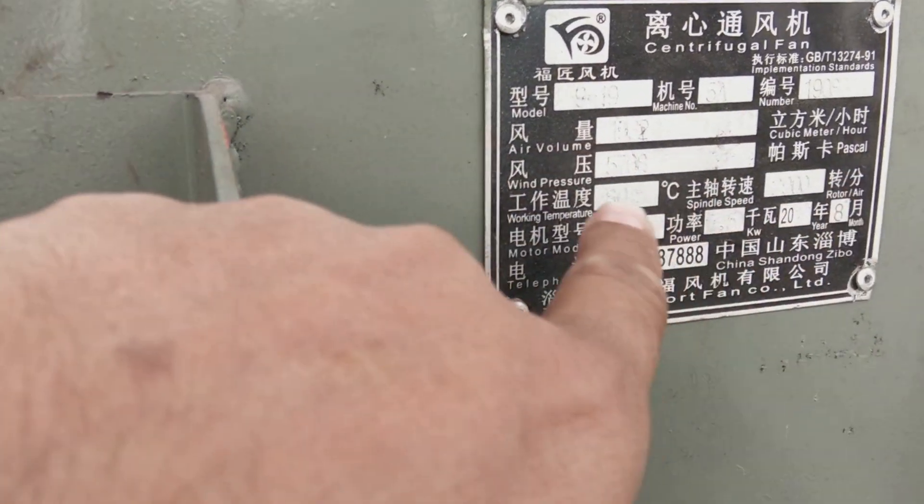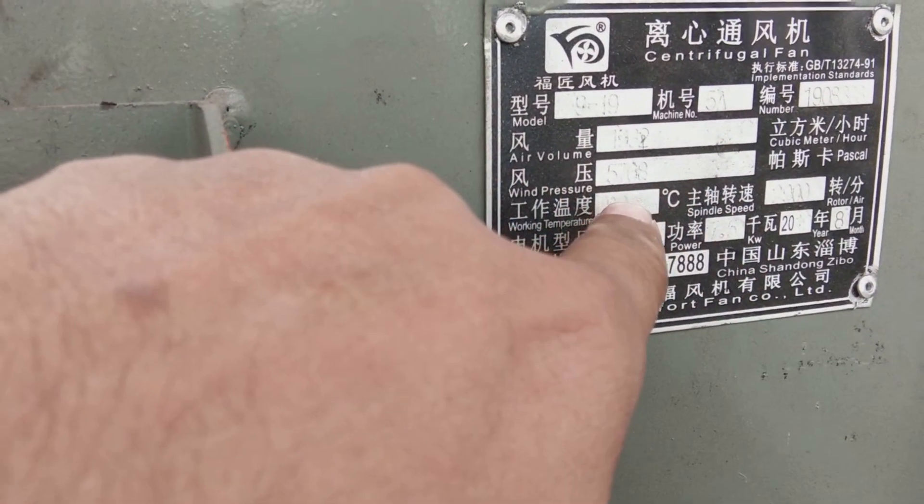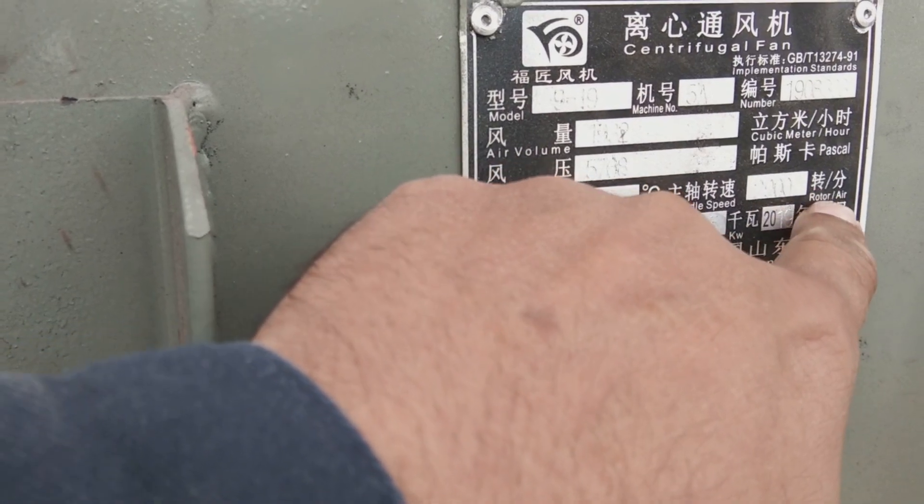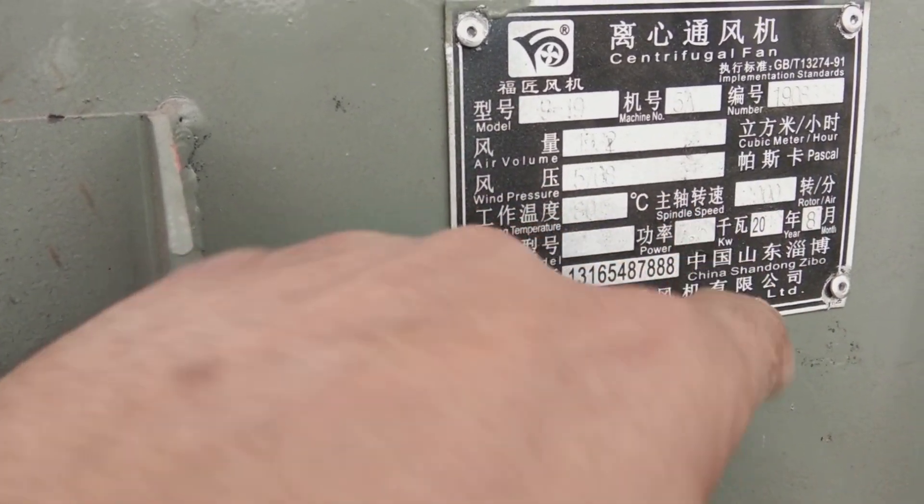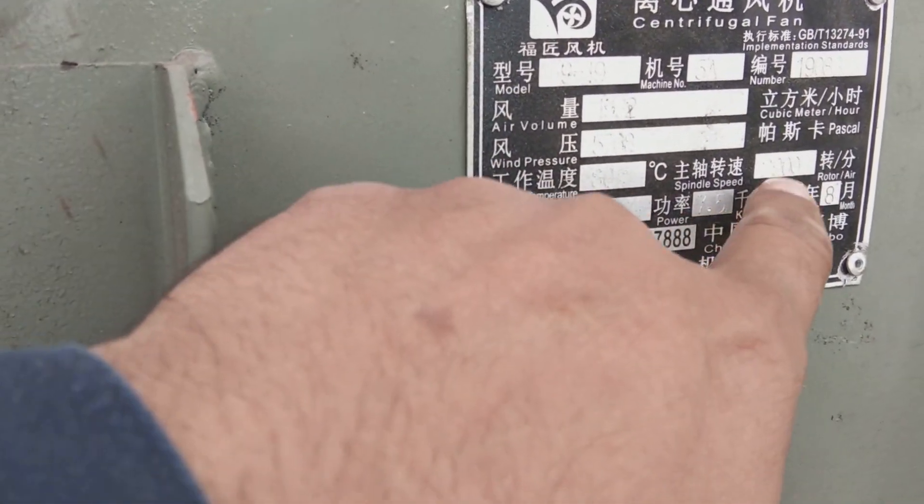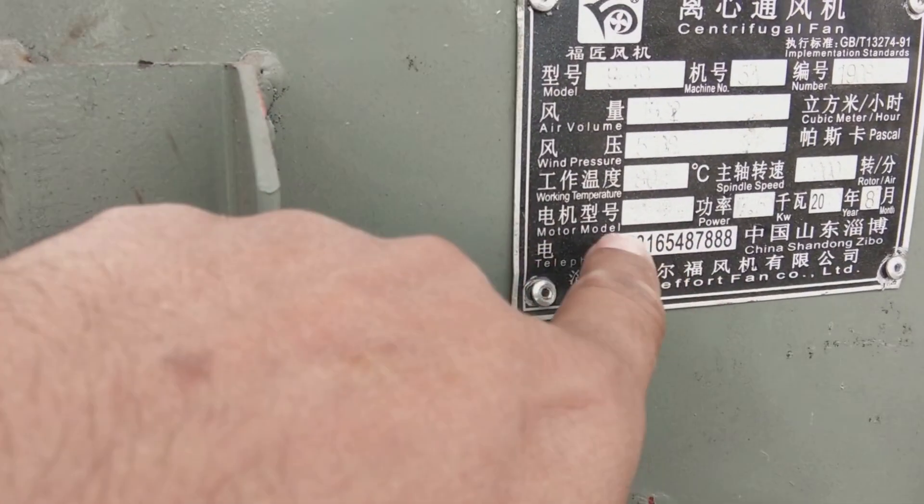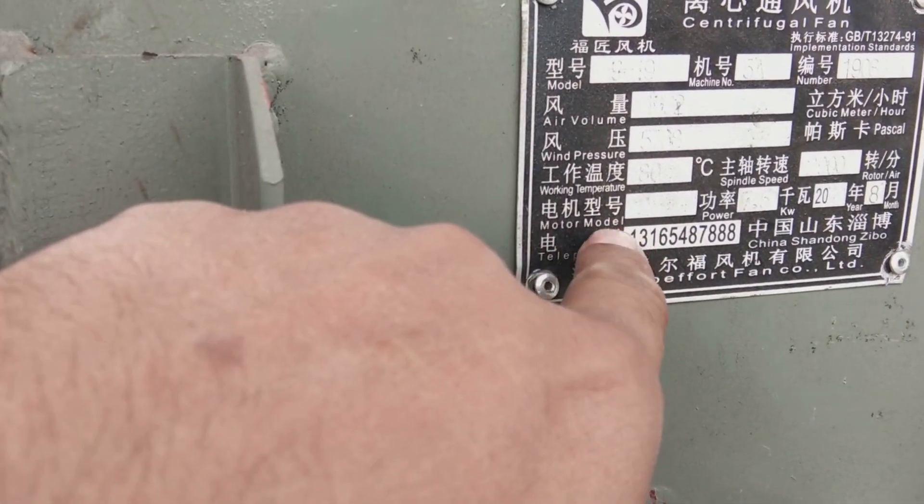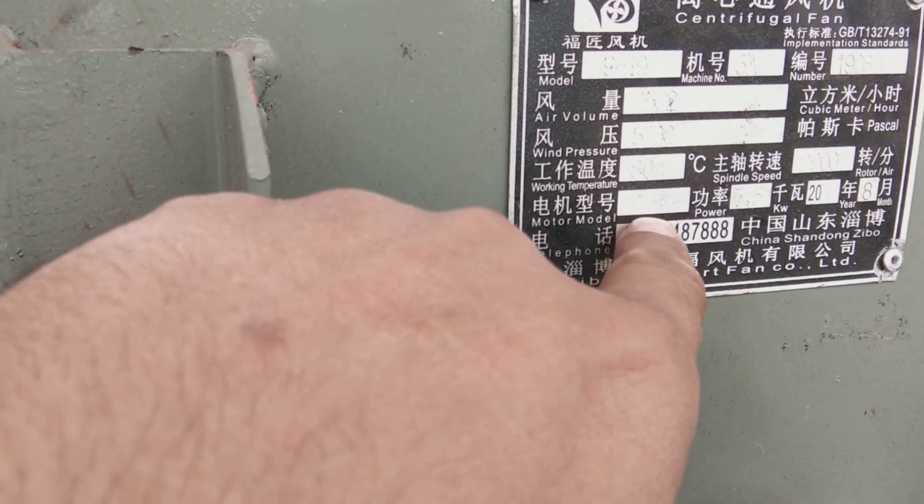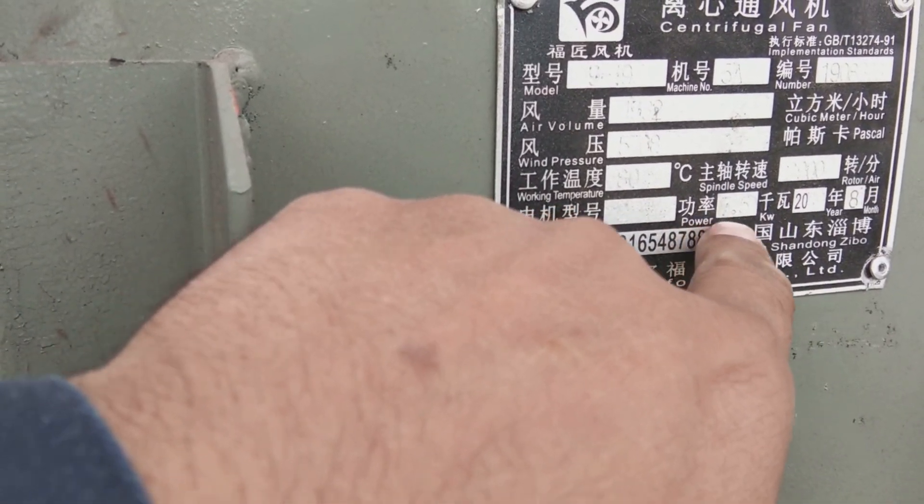Temperature rating is 80 degrees Celsius. Here's another detail - the spinning speed is 2900 RPM. The motor model you can see over here, though it's not written because the manufacturer doesn't know which motor will be installed.